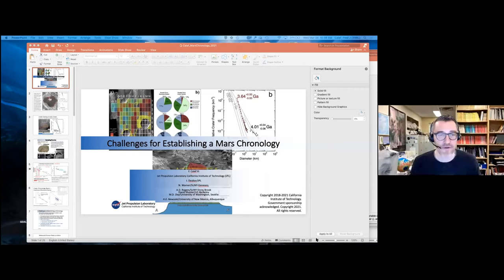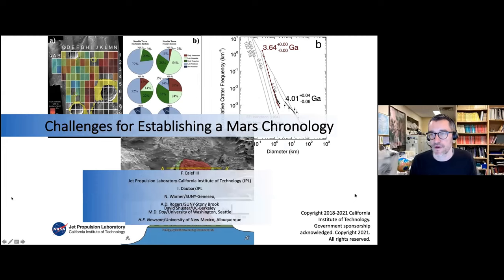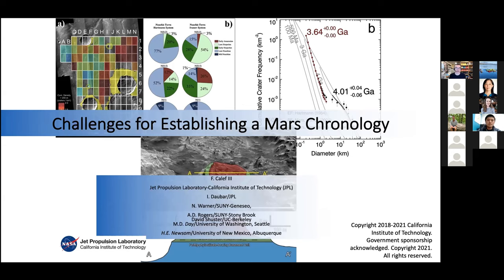I'm going to turn it over to Fred Califf from JPL, who's going to talk a bit about establishing a Mars chronology and some of the challenges. This is something near and dear to those of us on the Mars 2020 Perseverance rover mission, thinking about what samples you might need to get. So I'll turn it over to you, Fred, and we will then move into a discussion after that.